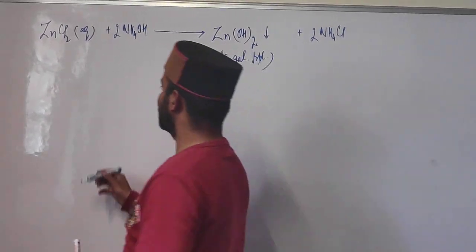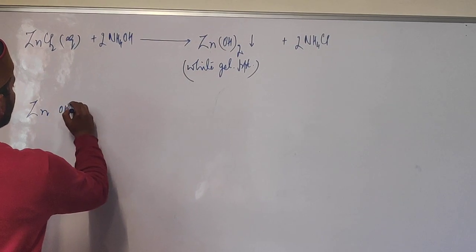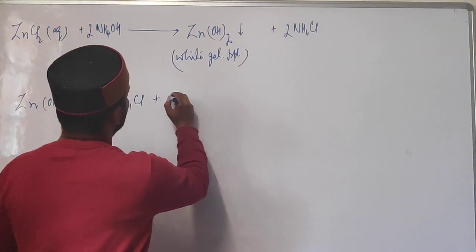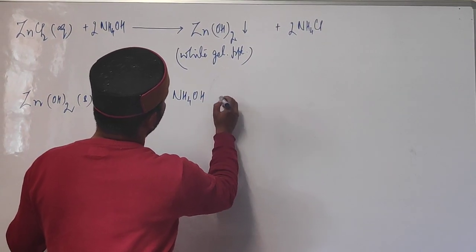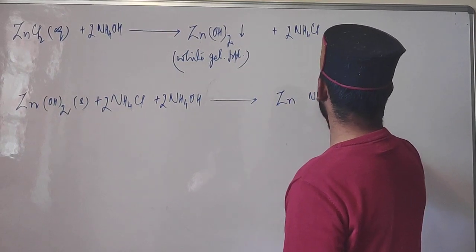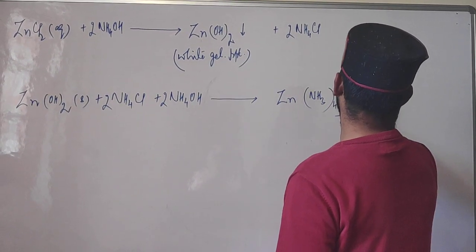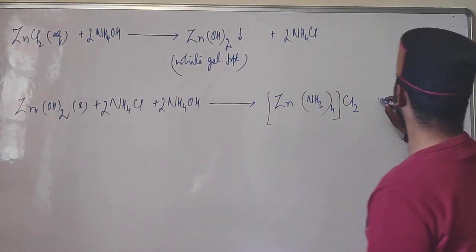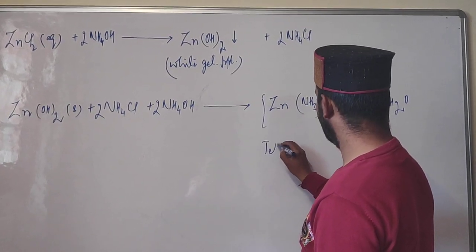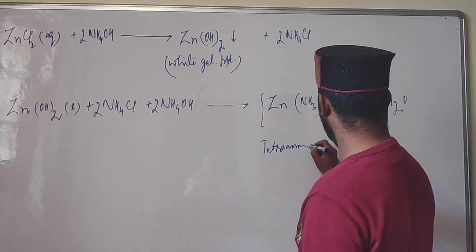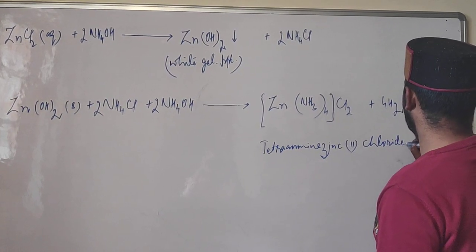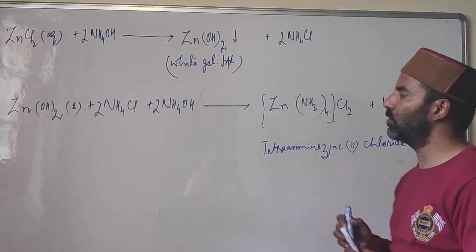This white gelatinous precipitate dissolves in excess ammonium hydroxide due to the formation of a water-soluble complex salt — tetraamine zinc(II) chloride [Zn(NH3)4]Cl2 — along with water. Since zinc salts are white, this solution will be colorless.